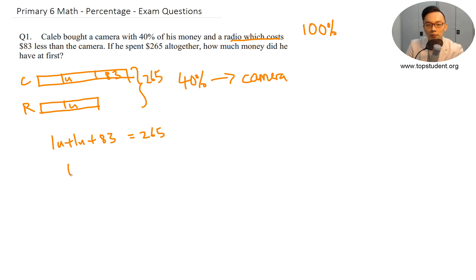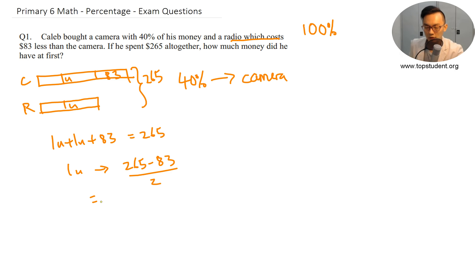So 1u equals (265 minus 83) divided by 2. I'm skipping a few steps — if you can't follow, ask me during class. So 1u is 91. My radio is 91, and my camera is 91 plus 83 equals 174.